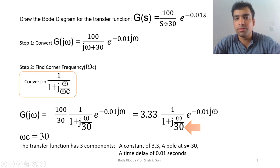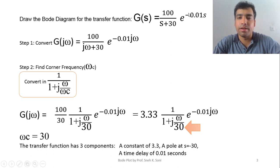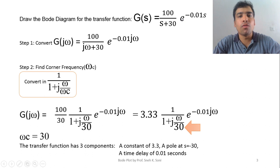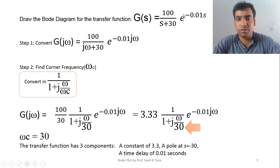This is our complete transfer function of the system. I would like to tell you that the delay term e^(-tds) will only have effect visible in the phase plot, and there is no significant effect in the magnitude plot. So whatever magnitude plot we draw for 100/(s+3) will be the same for this transfer function as well.